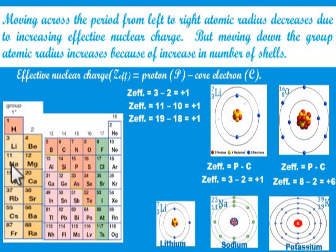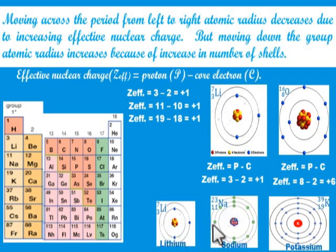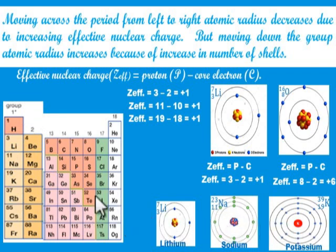Let's look at moving down the group. Consider the group 1 elements: hydrogen, lithium, sodium, and potassium. The atomic structure of lithium has two shells. The atomic structure of sodium has three shells. The atomic structure of potassium has four shells. As you move down the group, the number of shells is increasing, and because the number of shells is increasing, the atomic radius is also increasing. Down the group, the atomic radius increases because of increase in the number of shells.